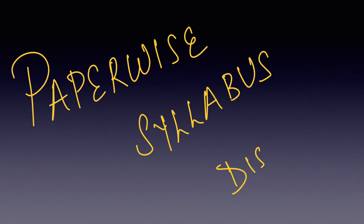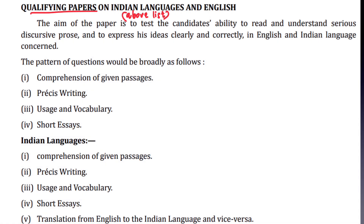Now let's come to a paper-wise discussion of the syllabus. There are two qualifying papers: one is a compulsory English paper, and the other is a language paper — I've already given the list for that. The aim of the paper is to test the candidate's ability to read and understand serious discursive prose and to express ideas clearly and correctly. The pattern includes comprehension, précis writing, usage and vocabulary, and short essays. For the language paper, there is one additional section: translation from English to the language of your choice. The next paper is the essay paper, where you write on topics given in the question paper.